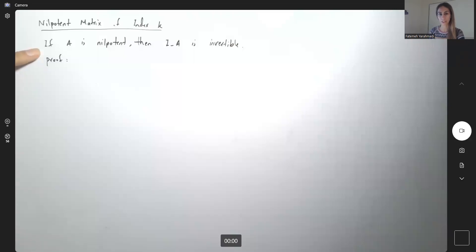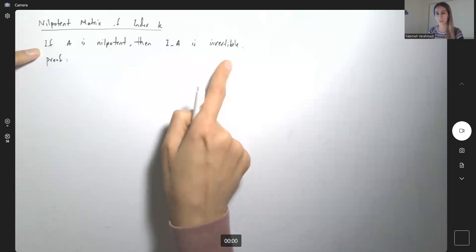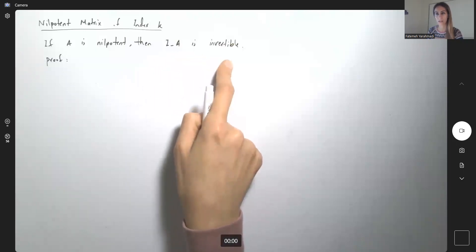If A is a nilpotent matrix, then identity matrix minus A is going to be invertible. Let's take a look at the proof.